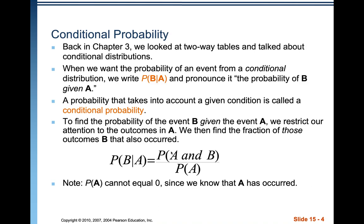We need to talk about conditional probability. If you remember back to chapter three, we looked at two-way tables or contingency tables and talked about conditional distributions. Related to that, we can talk about conditional probabilities. A conditional probability is an event from a conditional distribution, and we write it as probability of B given A.